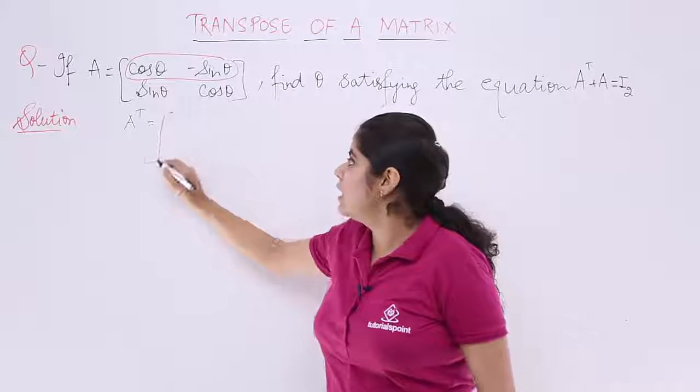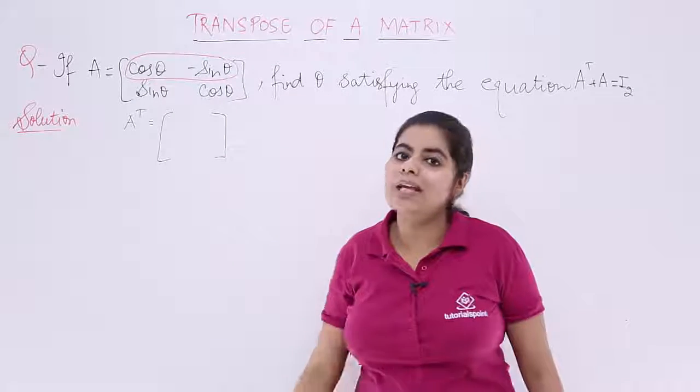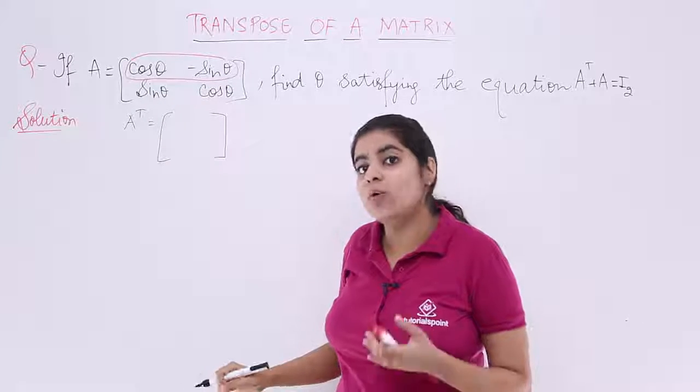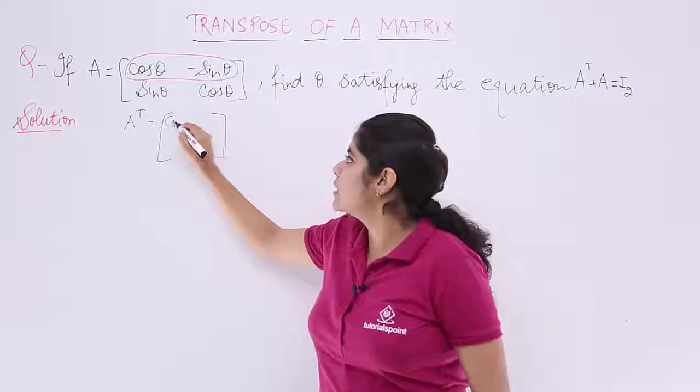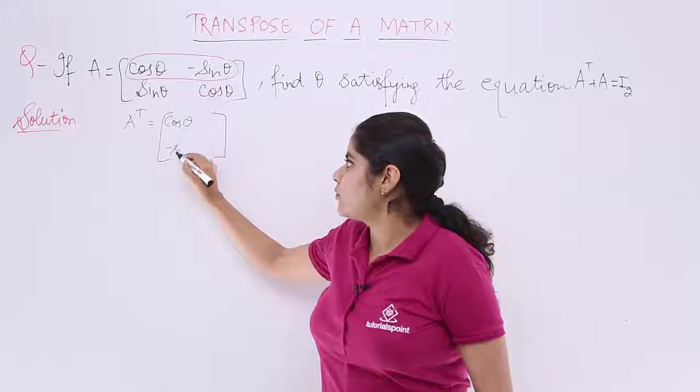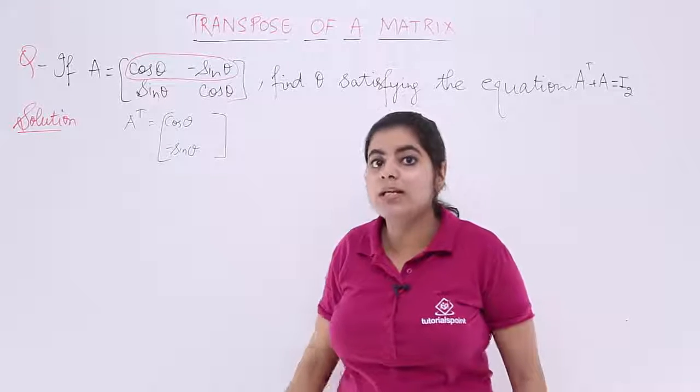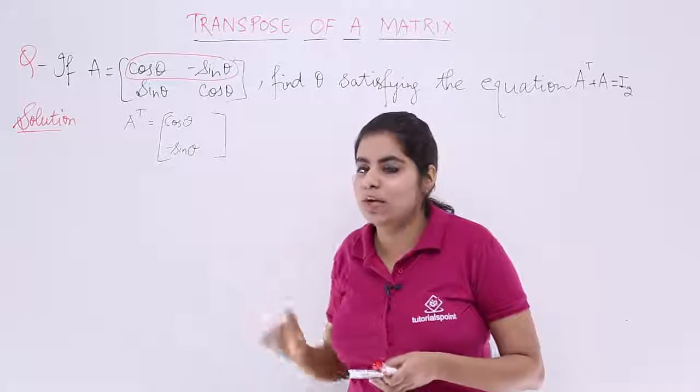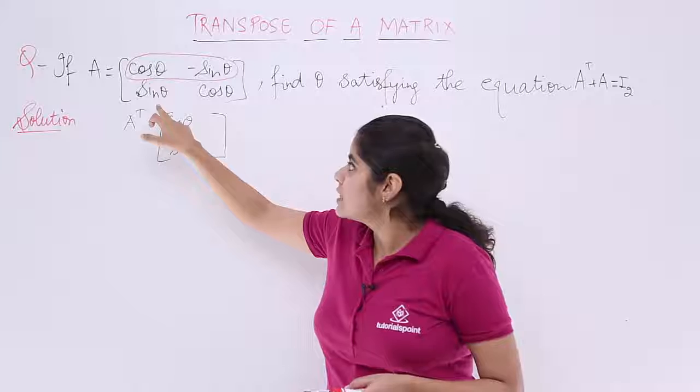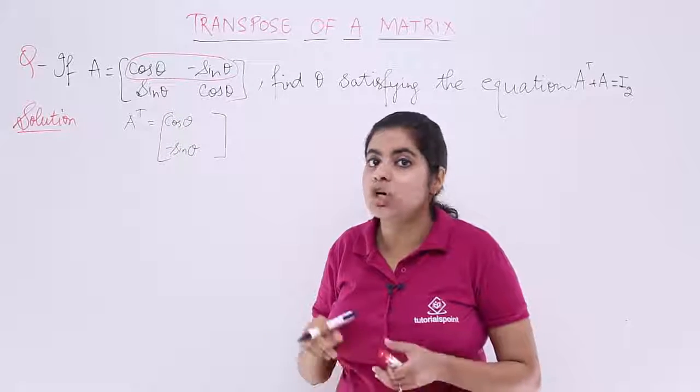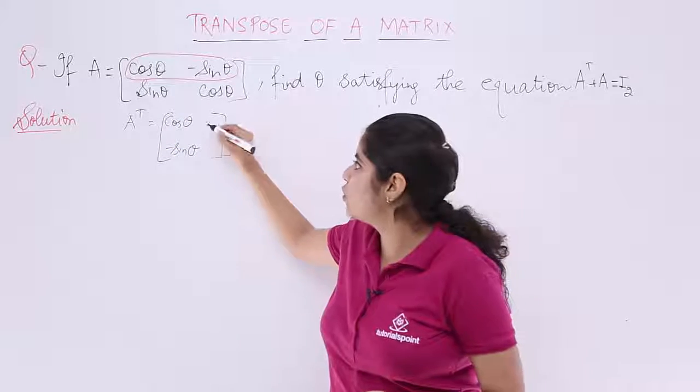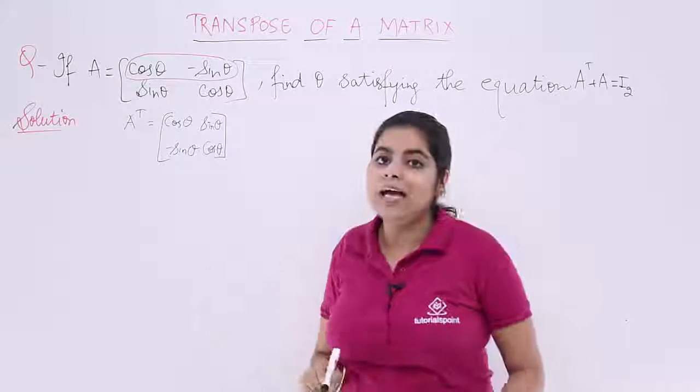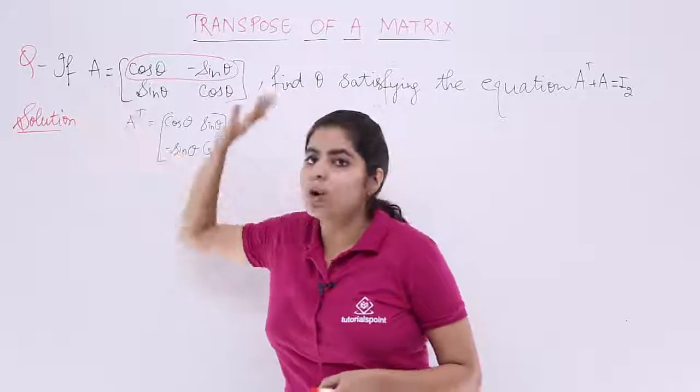A transpose is basically a 2 by 2 matrix. Row 1 has now become column 1. It is cos theta minus sin theta, which was the first row, now the first column. And sin theta cos theta is now my second column instead of second row. This is A transpose from this A.